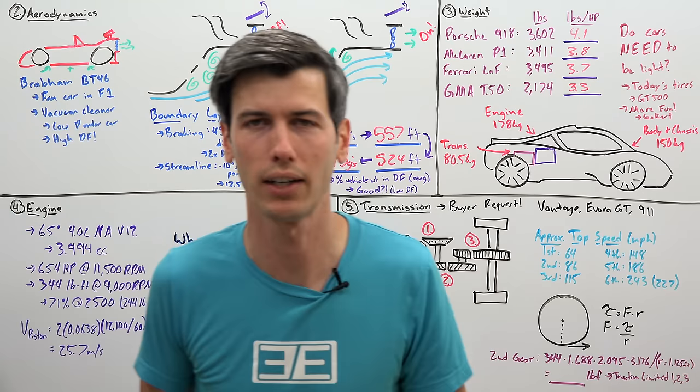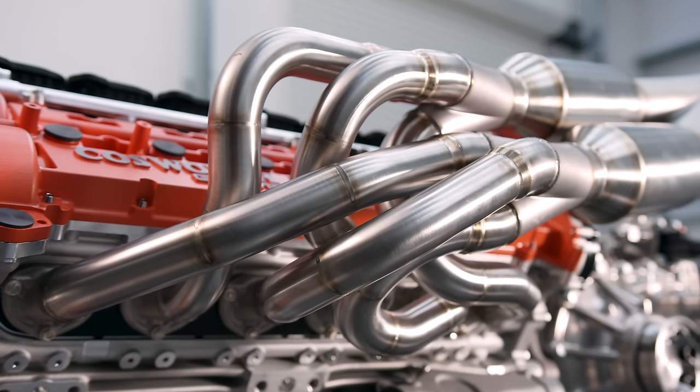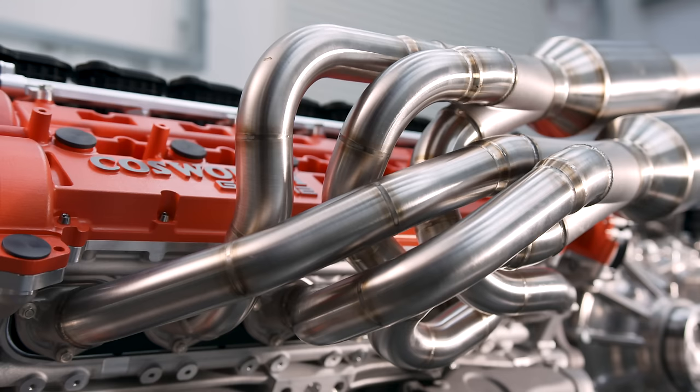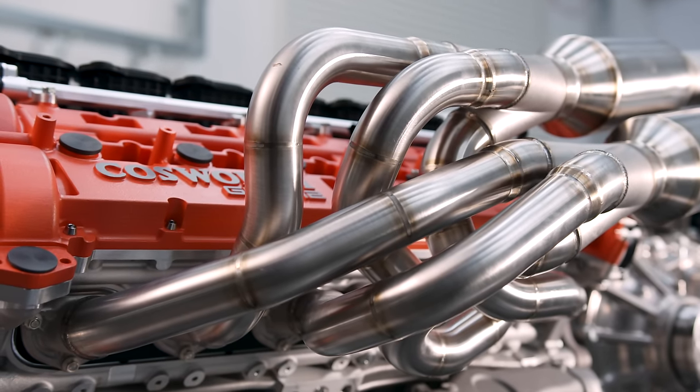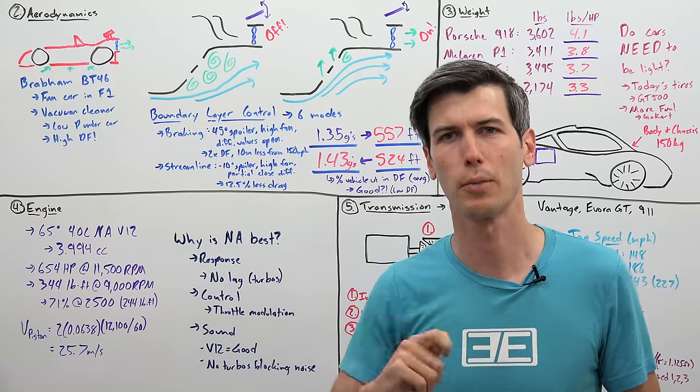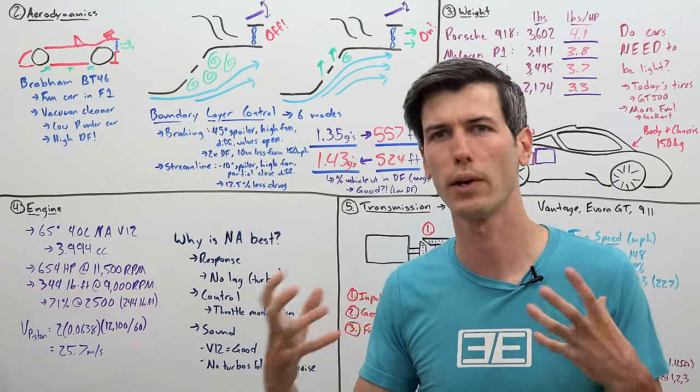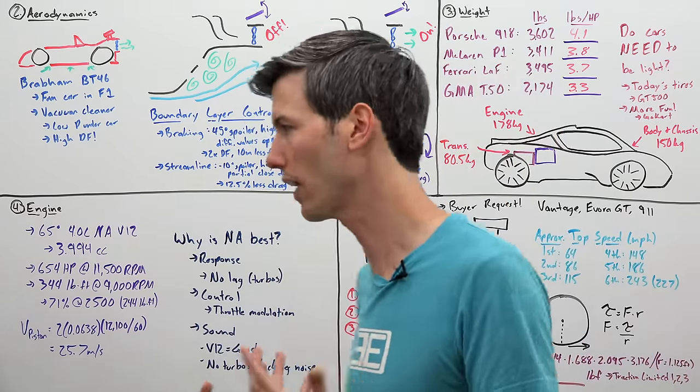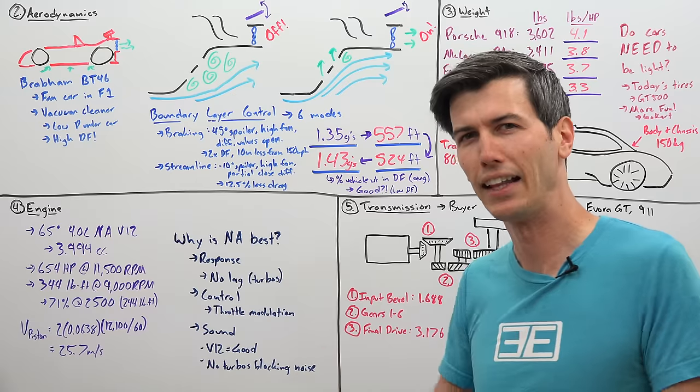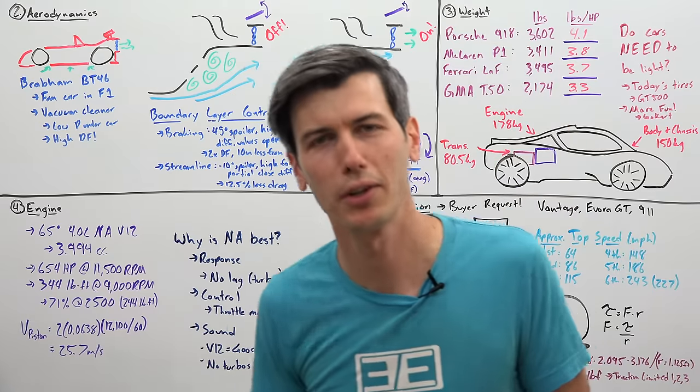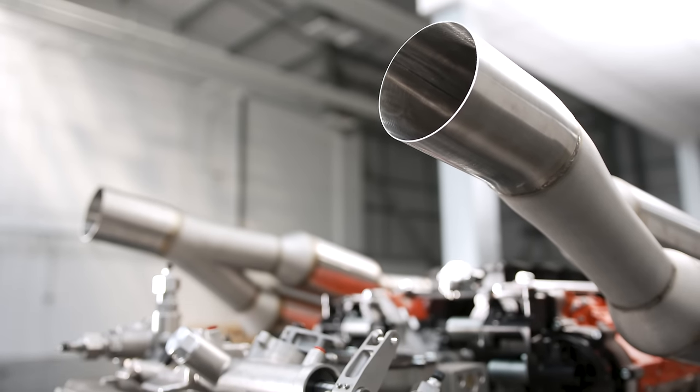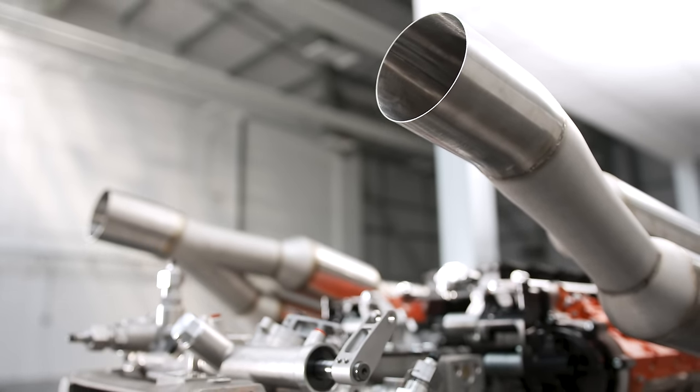So, why is naturally aspirated the best? Well, I think there's three reasons. First of all, response. You don't have lag. Things like turbos which cause delay between when you put the pedal down and when you actually get power. So, naturally aspirated has insanely good response. It has insanely good control. So, where your foot is on that throttle pedal determines how much power you're making. How much torque you're making. And it's not this weird sponginess like turbocharged cars get. And even superchargers where you have bypass valves. And you have to wait a little bit for that torque to come on. And then finally, sound. And this one's subjective. But are you really going to argue that a naturally aspirated V12 doesn't sound good? I don't think you are. I mean, they just sound great. And you don't have turbochargers blocking that beautiful sound.